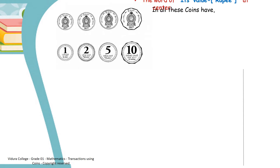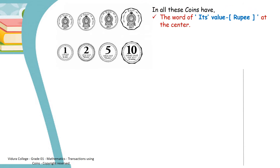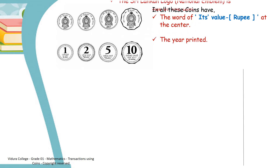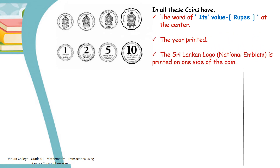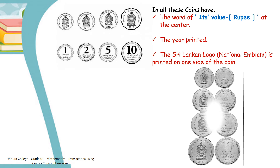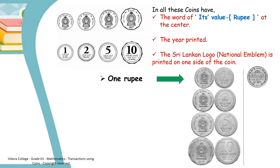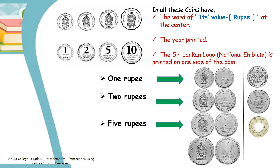Children, in all these coins have the word of its value. That means rupee at the center, the ear printed, and the Sri Lankan logo is printed on one side of the coin. These are the coins that we learnt: one rupee, two rupees, five rupees, and ten rupees.